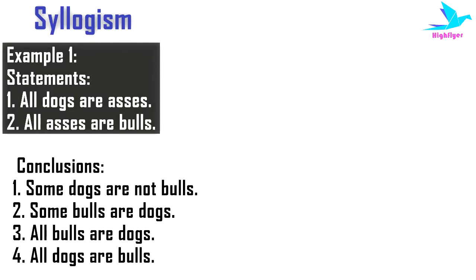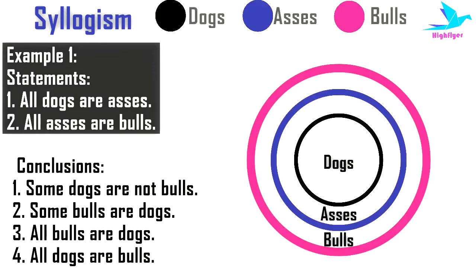Example 1. There are two statements given. Statement one says: All dogs are asses. The second statement says: All asses are bulls. The conclusions given are: 1. Some dogs are not bulls. 2. Some bulls are dogs. 3. All bulls are dogs. 4. All dogs are bulls.